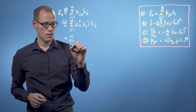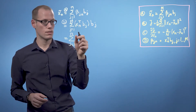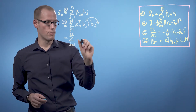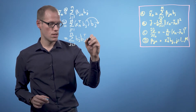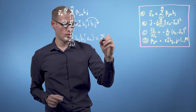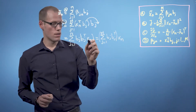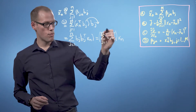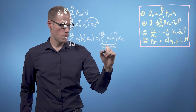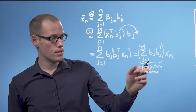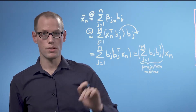Now we rewrite this. This is just a scalar — a dot product in this particular case. Dot products are symmetric, so we can swap the order, and we can also move the scalar. So what we end up with is bj times bj transpose times xn. We can write this generally as the sum j equals 1 to m of bj times bj transpose times xn, where we move xn out of the sum. And if we look at this, this is a projection matrix. So xn tilde is the orthogonal projection of xn onto the subspace spanned by the m basis vectors bj.